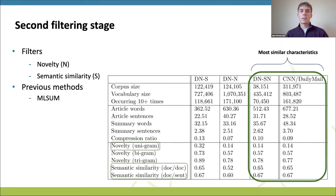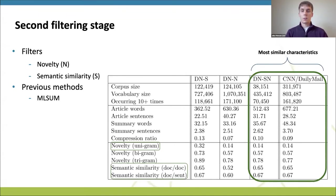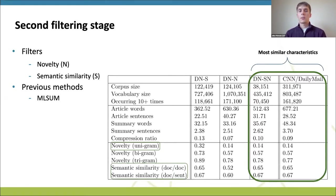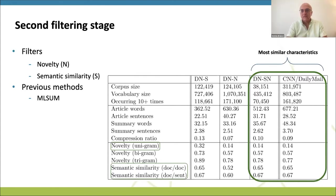Secondly, we further filtered the TNLC with thresholds on novelty and semantic similarity. Novelty was calculated as the fraction of n-grams in the summary that were not in the paired article. Semantic similarity was calculated as the cosine similarity between embedding representations of the two texts. DNS was filtered on semantic similarity, N on novelty, and SN on both. The highly filtered corpus gets closer to the characteristics of the CNN Daily Mail corpus, and certain filtering techniques have been deployed for similar purposes before, such as in the ML-sum corpus.